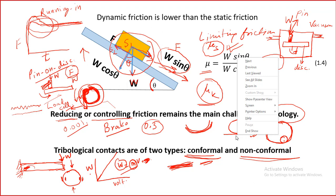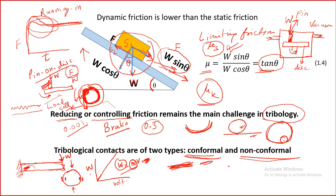In bearings also, the radius of curvature of the ball and the radius of curvature of the raceway are different — so that is a non-conformal contact. In a conformal contact, pressure is minimized because the contact area is very large. In a non-conformal contact like a sphere on flat, there is only a point contact. For a point contact, the pressure will be extremely high — load divided by a very small area — so the chance of plastic deformation is very high.